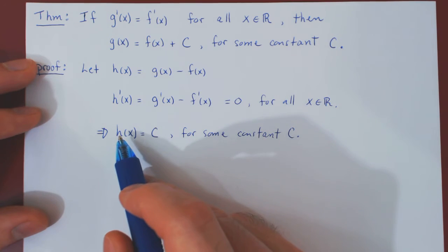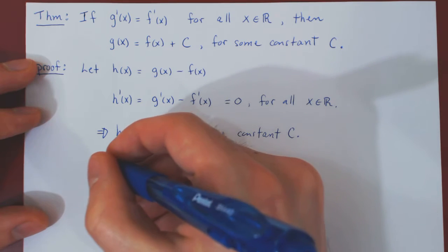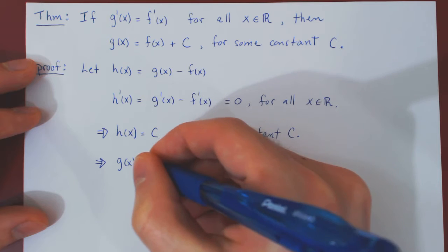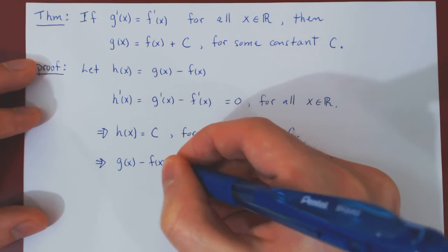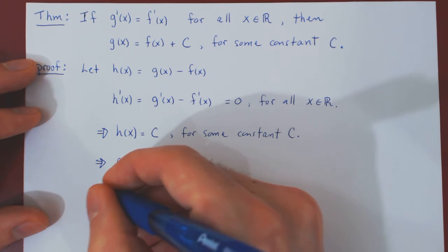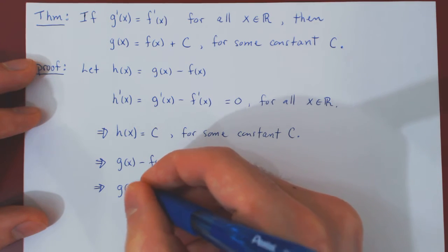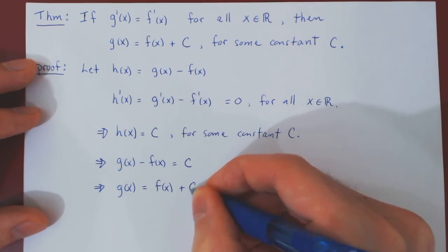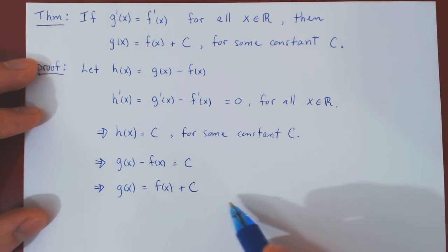But what was h of x? It was g minus f. Adding f of x on both sides, we have that g of x must be f of x plus some constant, which proves the result.